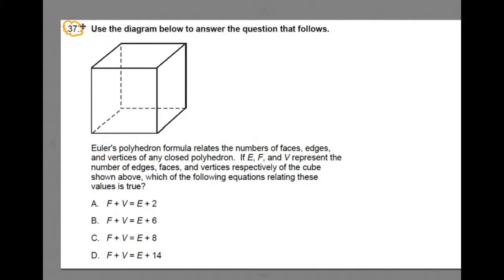So let's start by reading it over. Number 37 says, use the diagram below to answer the question that follows. They give us a diagram of a cube, a three-dimensional shape made up of polygons, and another name for that is a polyhedron.